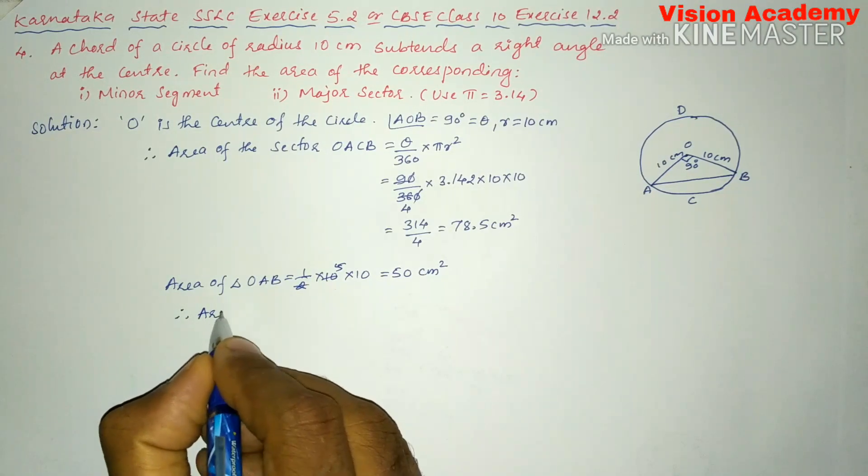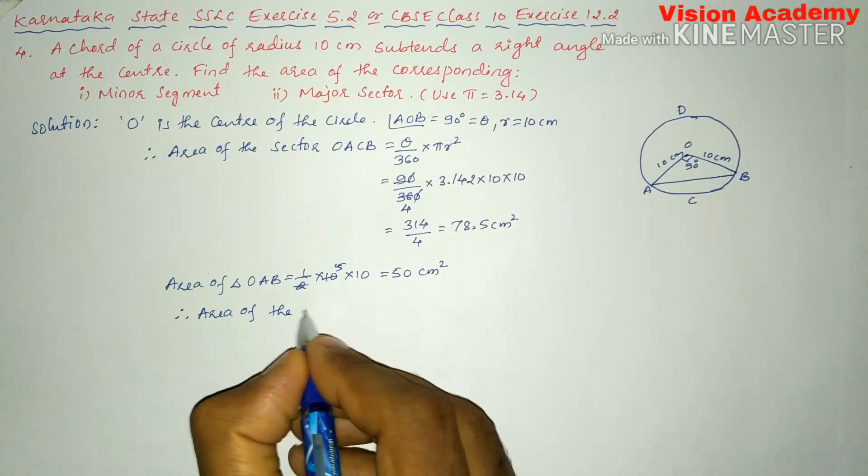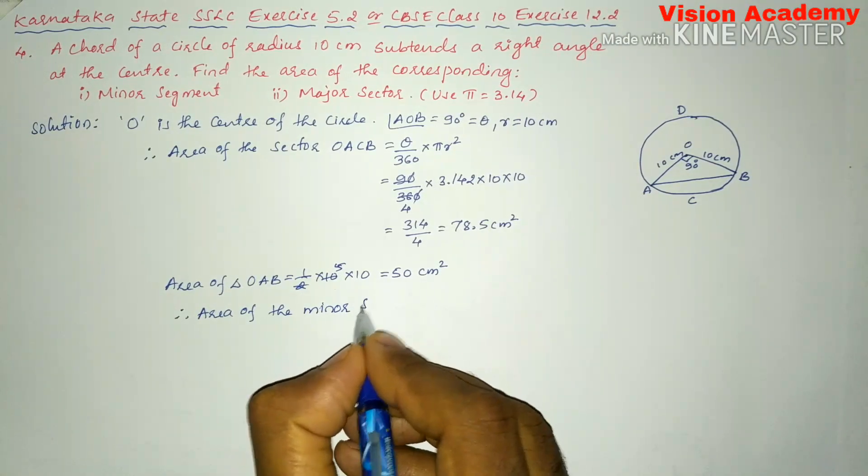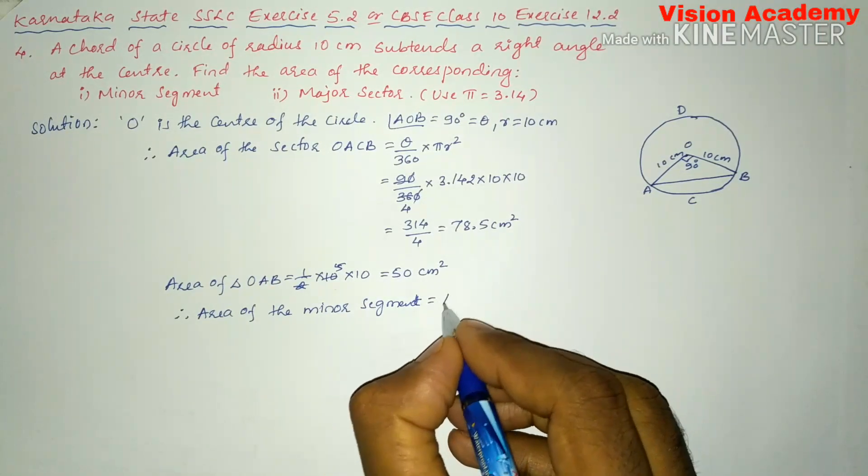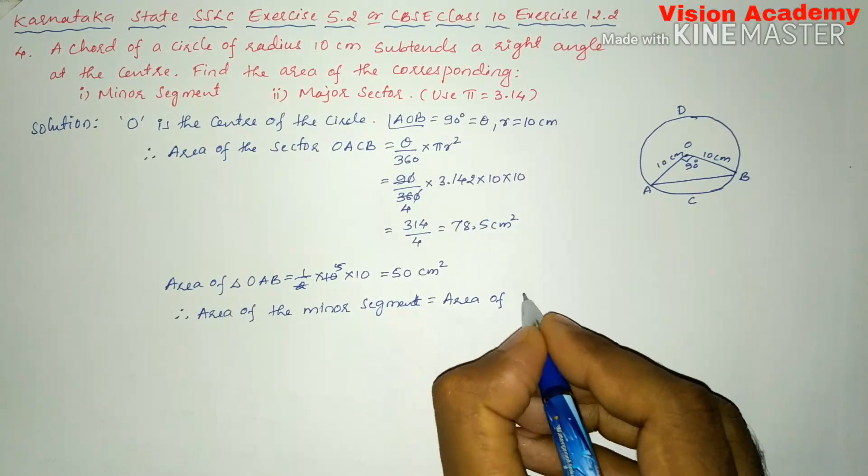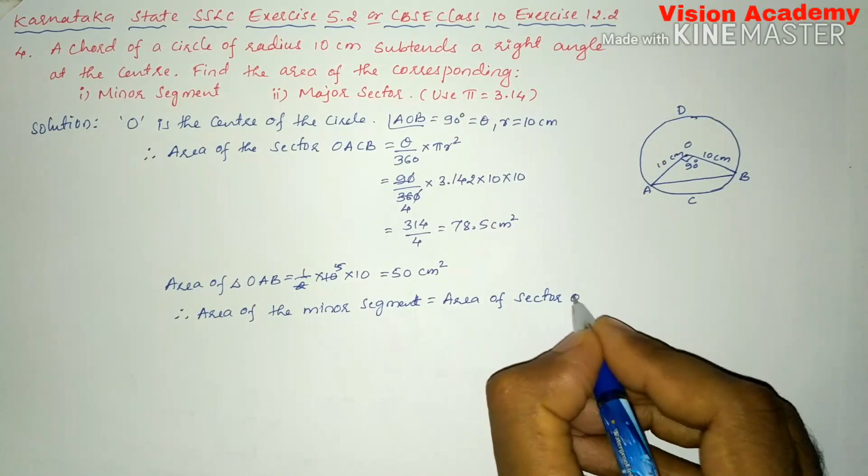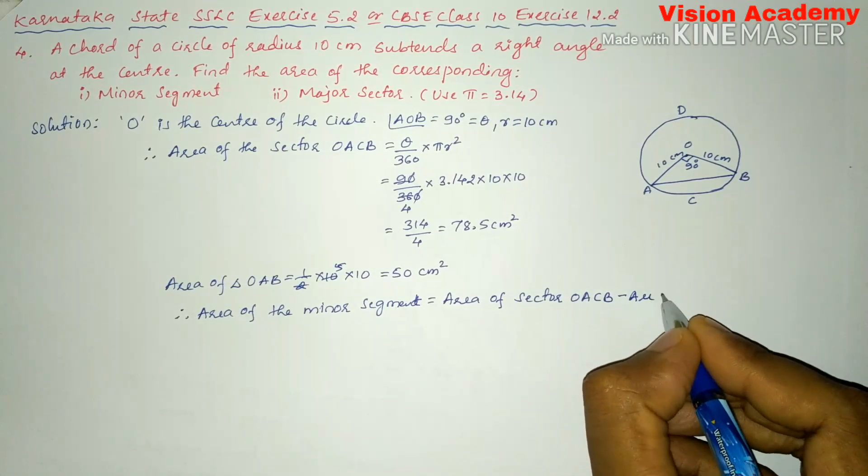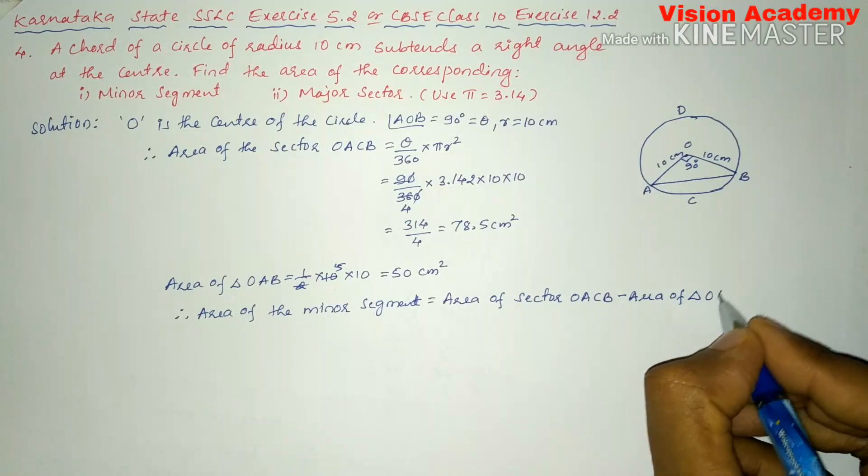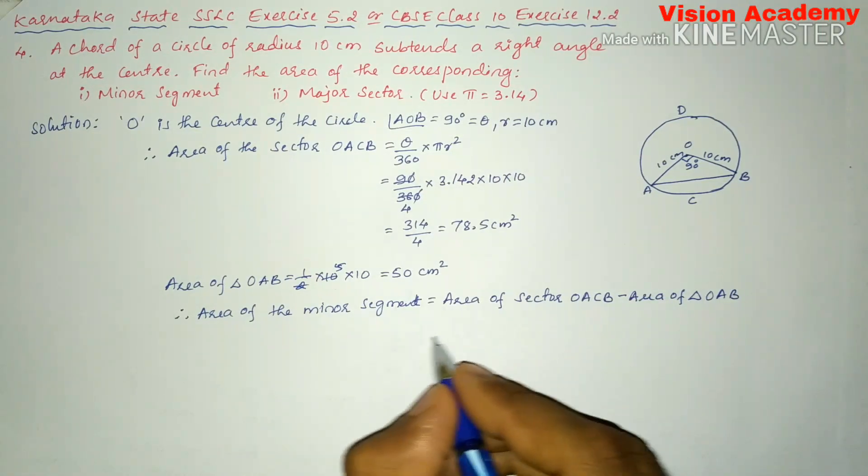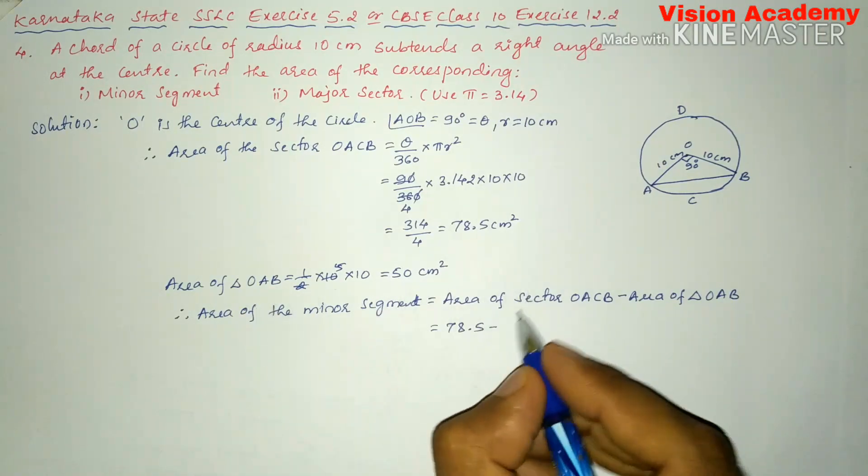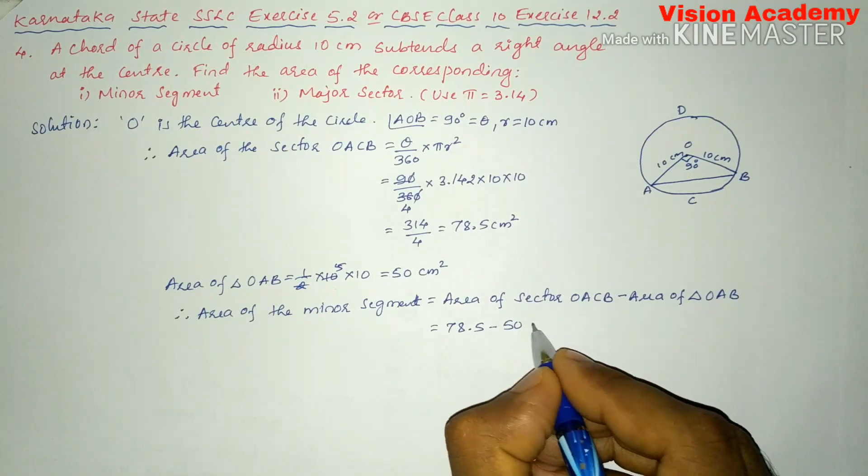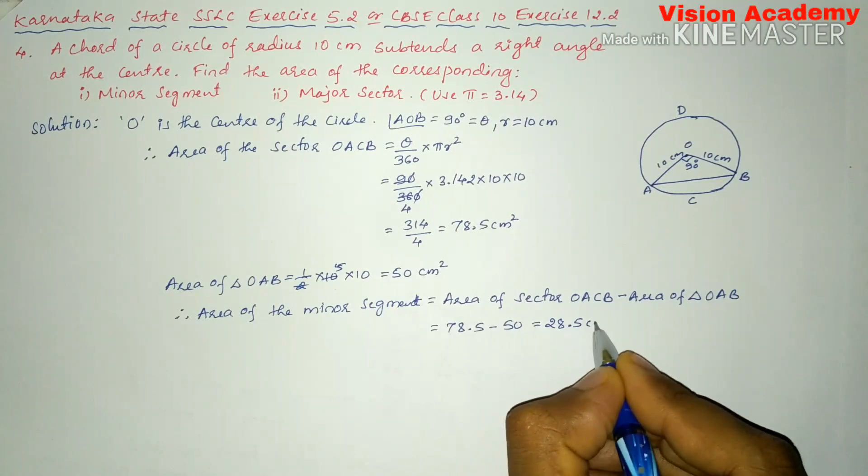Therefore, area of the minor segment is area of sector OACB minus area of triangle OAB. Here area of sector is equal to 78.5 minus area of OAB is 50. This gives us 28.5 centimeter square.